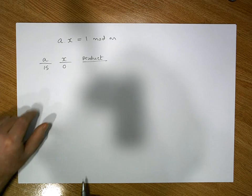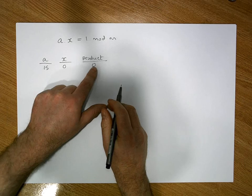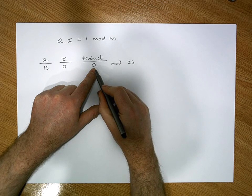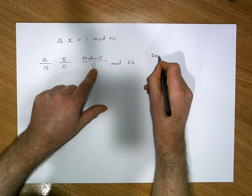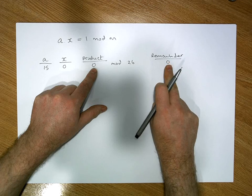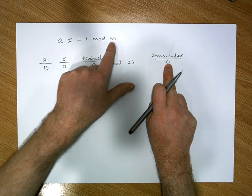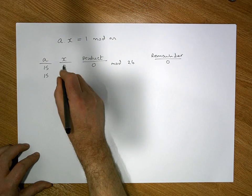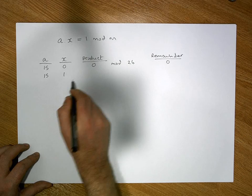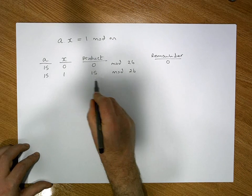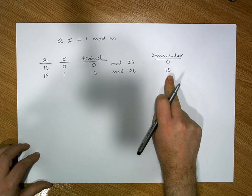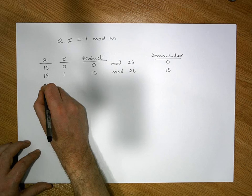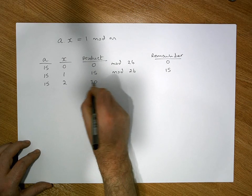Some candidates: x=0. We have 15 times 0 equals 0, and 0 modulo 26 — 26 goes into 0 zero times with a remainder of 0. The remainder is 0, but we want a remainder of 1, so x=0 doesn't work. Next, x=1: 15 times 1 is 15, modulo 26 — 26 goes into 15 zero times with a remainder of 15. That's not 1, so 1 is not the multiplicative inverse of 15.